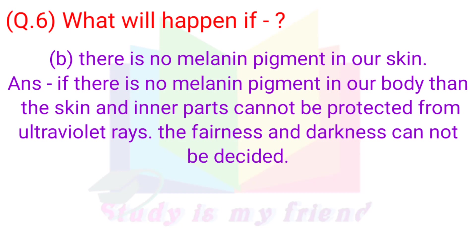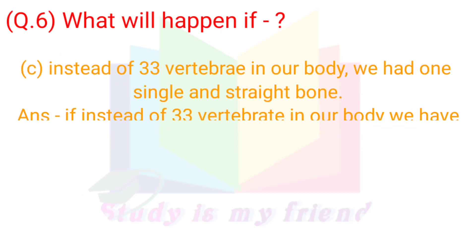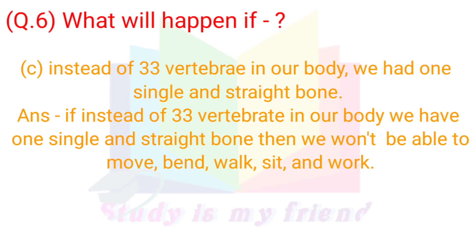Question 6B. What will happen if there is no melanin pigment in our skin? Answer: If there is no melanin pigment in our body, then the skin and inner parts cannot be protected from ultraviolet rays, and fairness or darkness of skin cannot be determined. Question 6C. What if instead of 33 vertebrae we had one single straight bone? Answer: Then we would not be able to move, bend, walk, sit, or work.